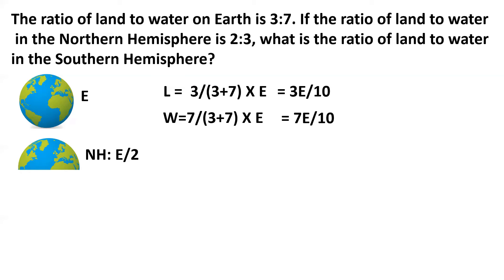The second line of the problem states that the ratio of land to water in the northern hemisphere is approximately 2 to 3, which means that if we represent the northern hemisphere by 5 parts — 5 comes from 2 plus 3 — then 2 out of those 5 parts are land and 3 out of those 5 parts are water.